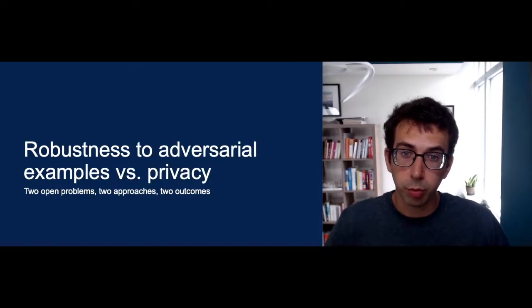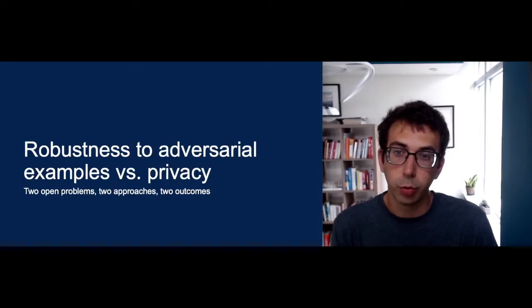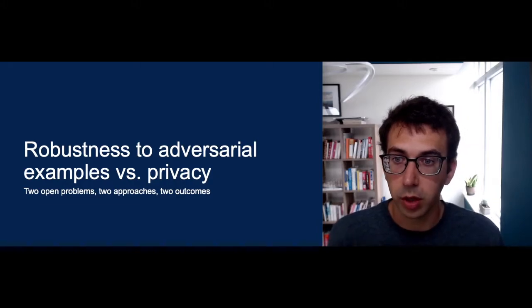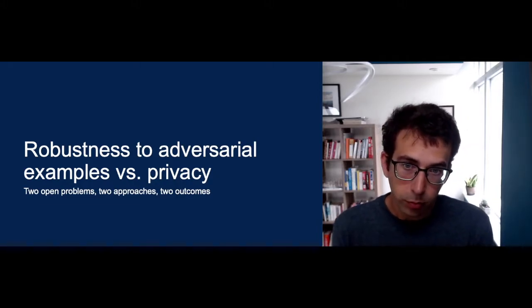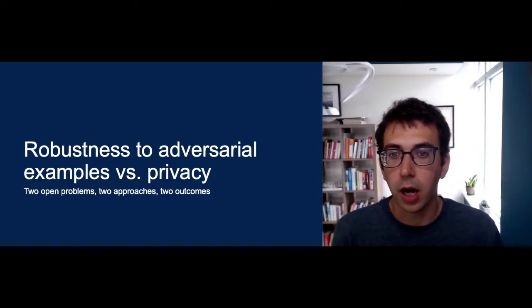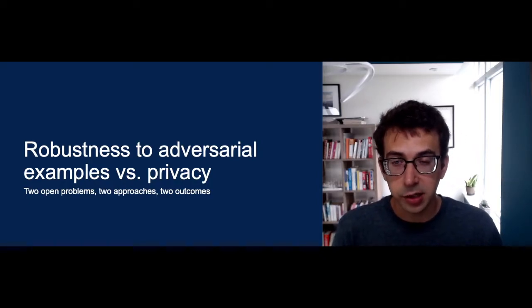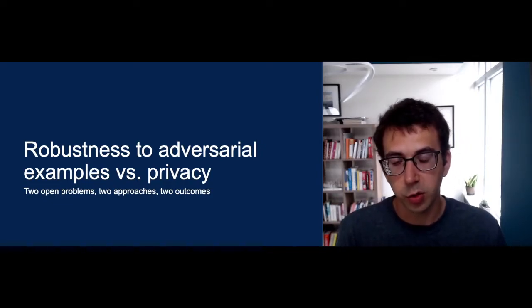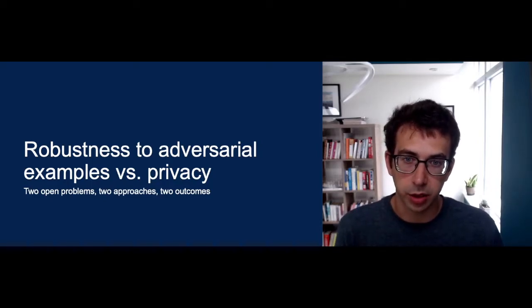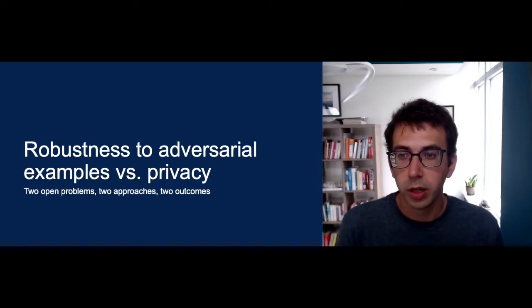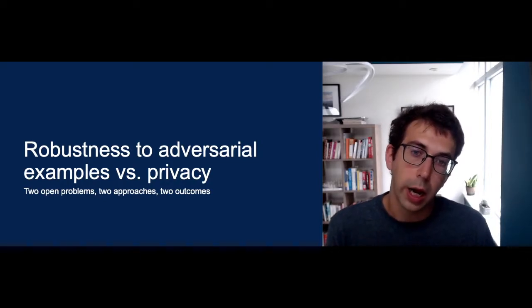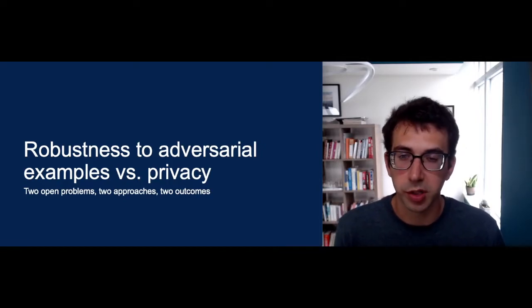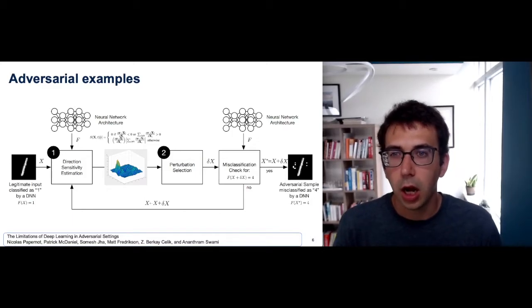In the first part of this presentation, I'm going to contrast our work on robustness to adversarial examples — one possible threat against the integrity of ML systems — with work we've done toward preventing privacy attacks. We took very different approaches to tackle each of these problems, leading to very different outcomes. I think we can learn from our mistakes in one area to build more trustworthy ML systems in a more principled way.